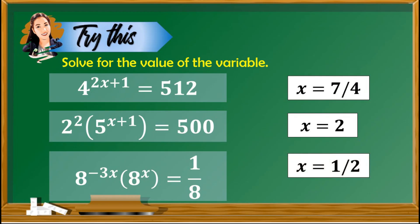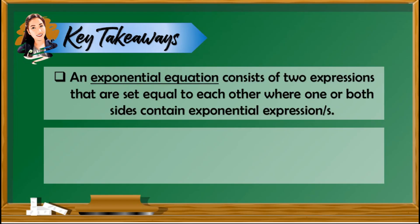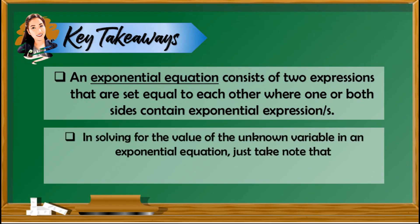Were you able to answer all of this? If yes, great job! Here are the important things to take note: an exponential equation consists of two expressions that are set equal to each other where one or both sides contain exponential expressions. To solve for the value of the unknown variable, take note that if a raised to b is equal to a raised to c, then b is equal to c — meaning you need to make the bases the same so that you can equate the exponents.